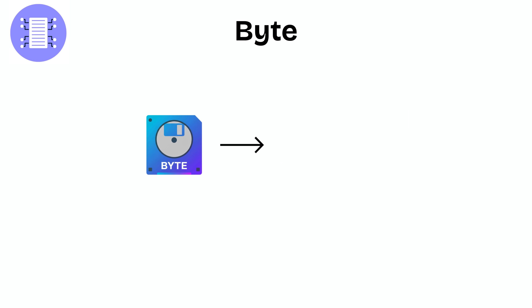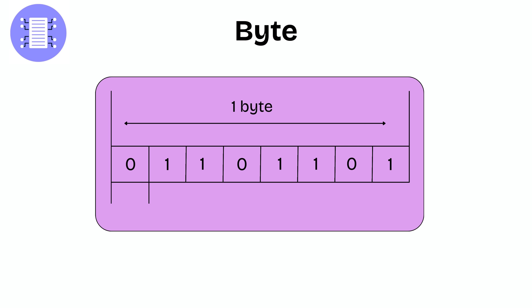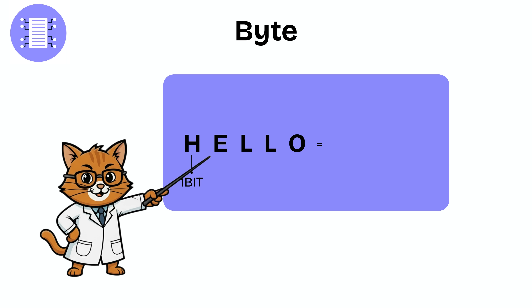Byte. A byte is the foundation of digital storage. It equals 8 bits and each byte can store a single character, like A, a number, or a symbol. For example, the word hello takes up 5 bytes.